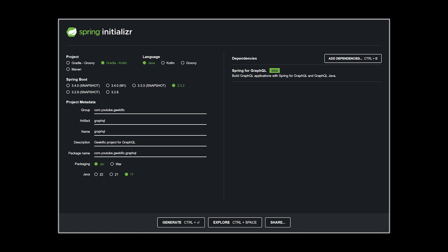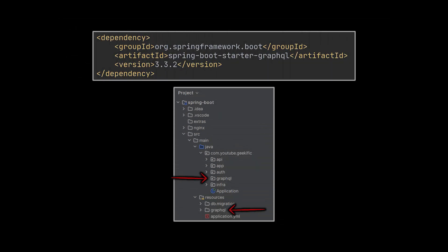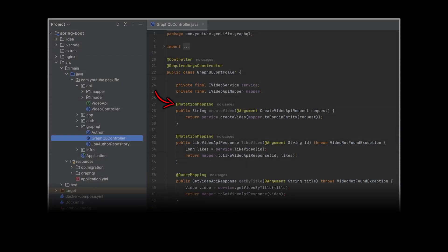Okay, in that project we'll keep everything as is, add the dependency we see to our pom.xml file, and create a new package named GraphQL. Here we will create a new controller class.